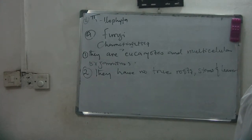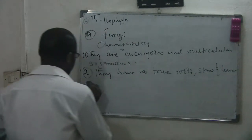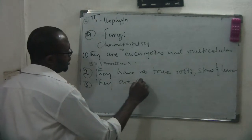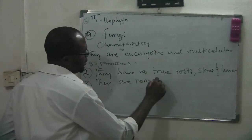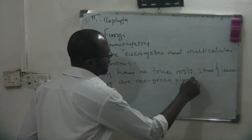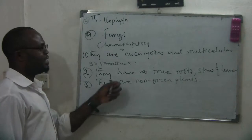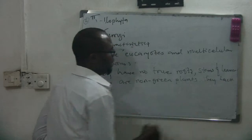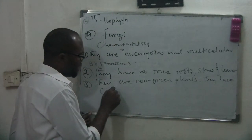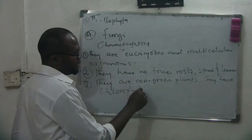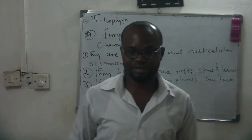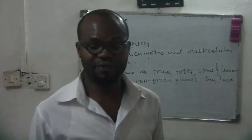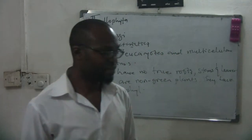The third characteristic: fungi are non-green plants. They are non-green plants because they lack chlorophyll. Chlorophyll is responsible for the green pigmentation in plants, so plants without chlorophyll are not green in color.